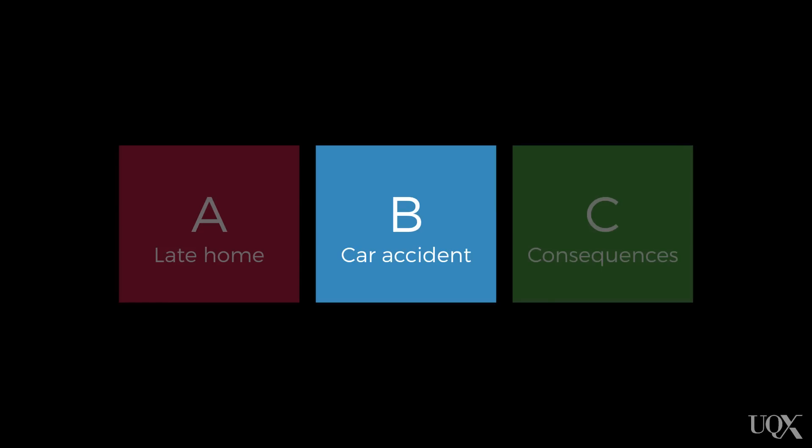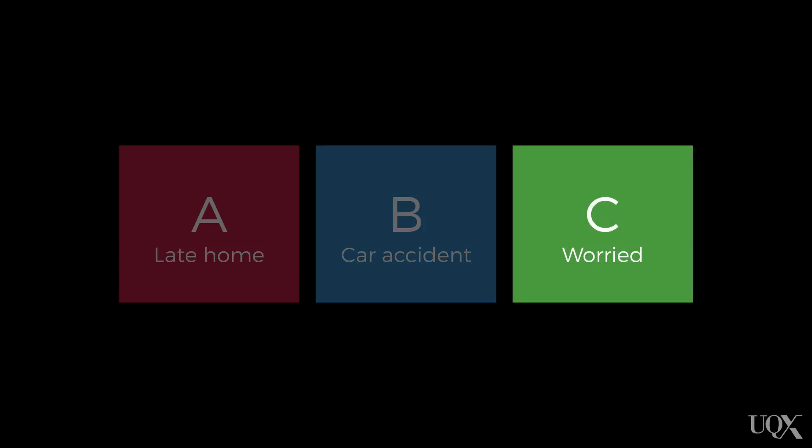Another different way of explaining this event to yourself is that you think your partner has had a car accident on their way home from work. If you genuinely believe that this is the reason your partner is late, a likely emotional consequence is that you will be worried. In terms of physiological consequences, your heart rate might go up. In terms of behavioural consequences, you might try calling your partner — you might even try calling the nearest hospital.